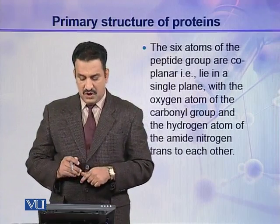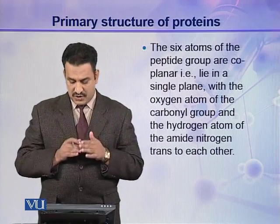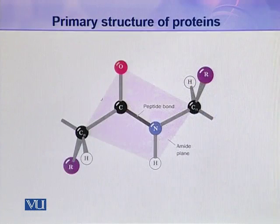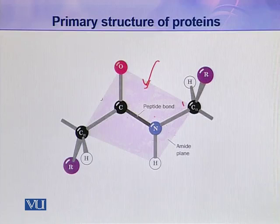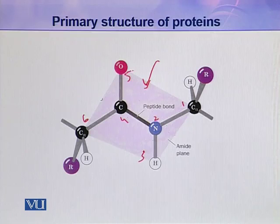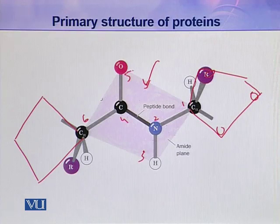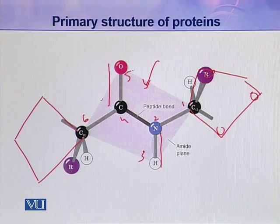The oxygen atom of the carbonyl group and the hydrogen atom of the amide nitrogen are in trans position. As seen in this picture, this peptide group as a whole contains six atoms: one, two, three, four, five, and six. These six atoms lie in a single plane. Another peptide group also contains six atoms but lies in another plane. In this peptide group, the C=O and N-H are always in trans configuration.